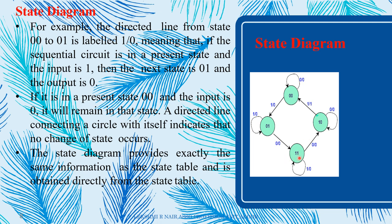When the present state is 11 and input is 0, then the next state is 10 and output is 0. Like that, we can represent all the states, all the present states, all the next states, and all the relationships between the states. So this is an example of a state diagram.